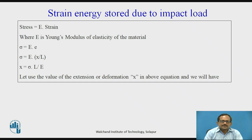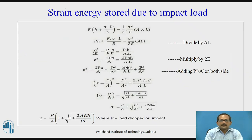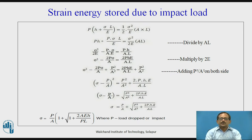Now, substituting the value of extension x = σl/E into the above equation, we have: P × (h + σl/E) = (1/2) × σ² / E × A × l. Expanding the left side: P×h + P×σl/E = σ² / (2E) × A×l.